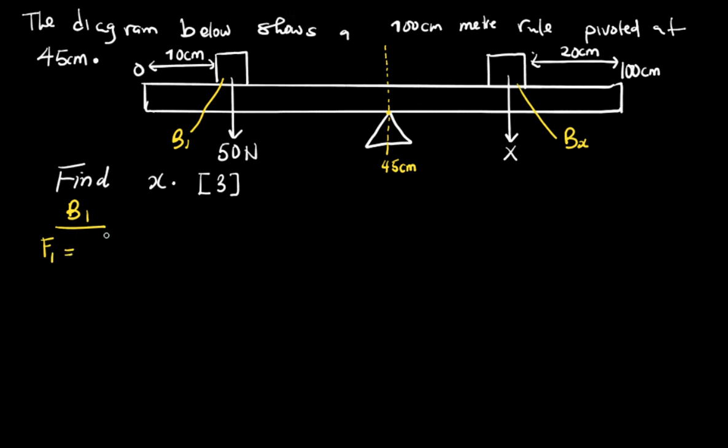Let's put the data for B1. What is the force? So I'll say F1 is 50 newtons. What is the distance? This distance we're talking of is the distance from where it is to the pivot. The pivot is at 45 and from zero to where the box is, they're saying it's 10 centimeters. So 45 minus 10, which is 35, is the distance of the box from the pivot. It's 35 centimeters.